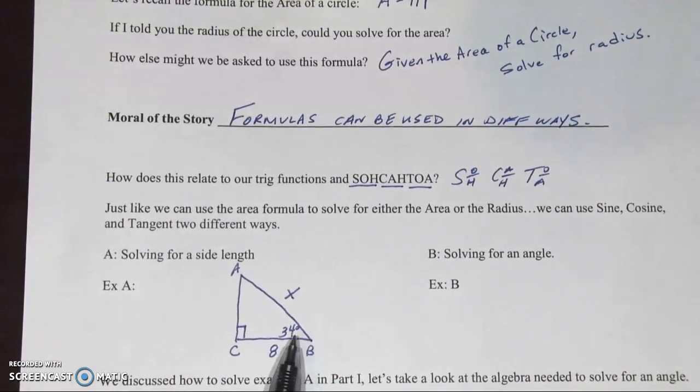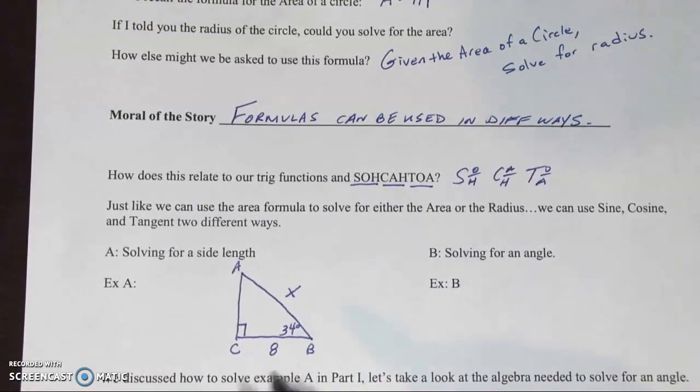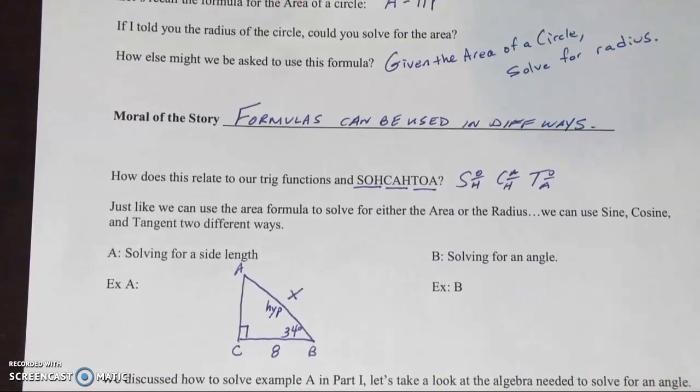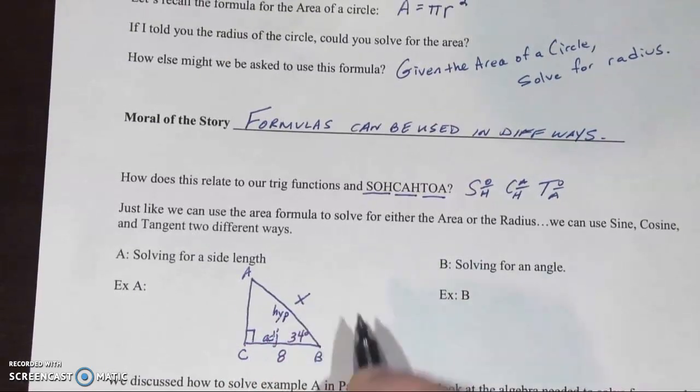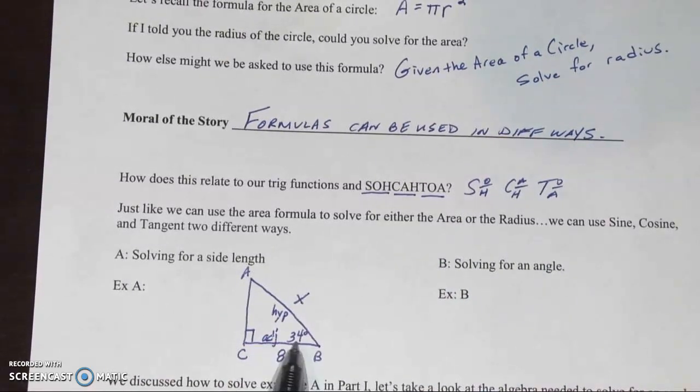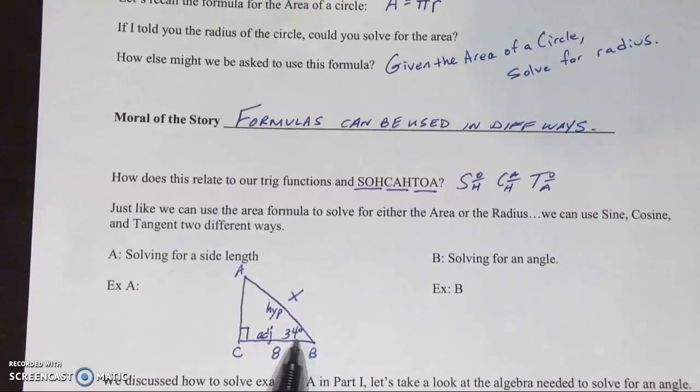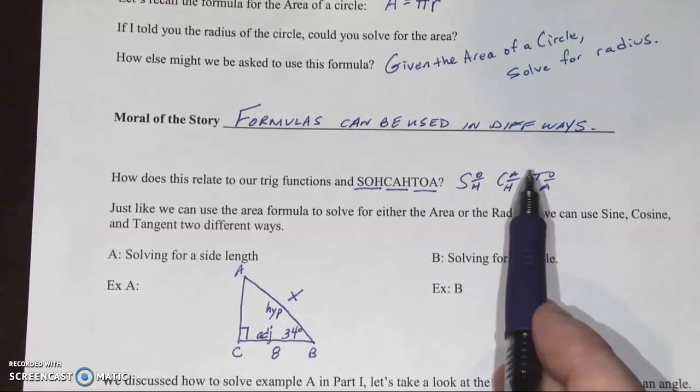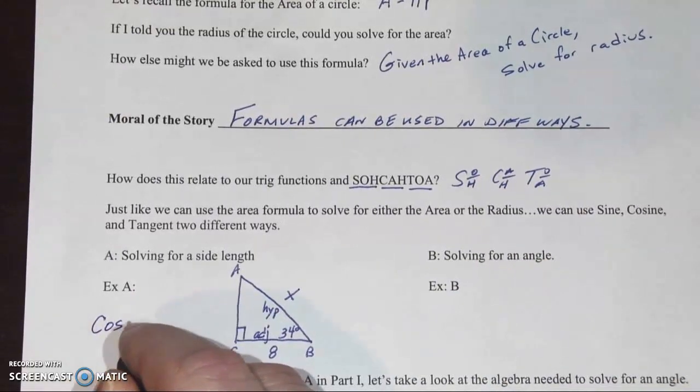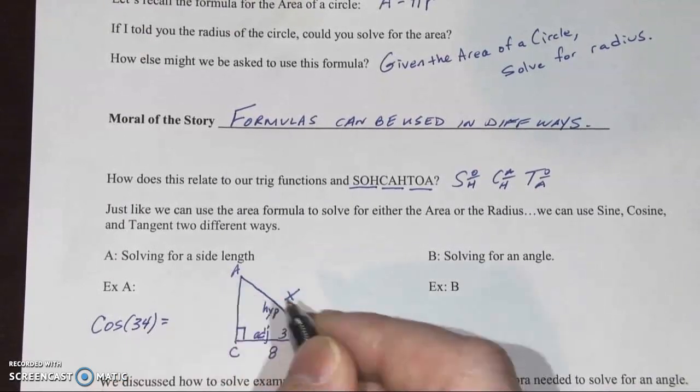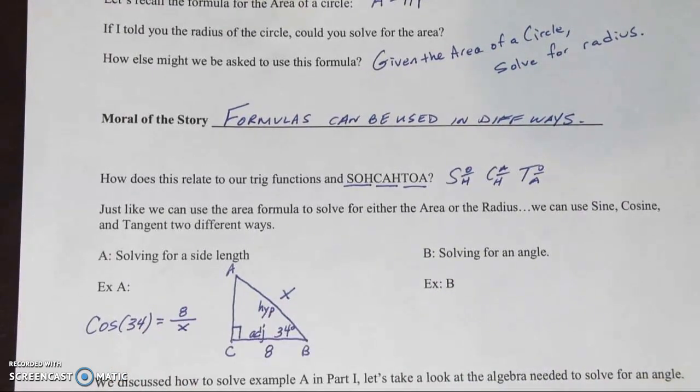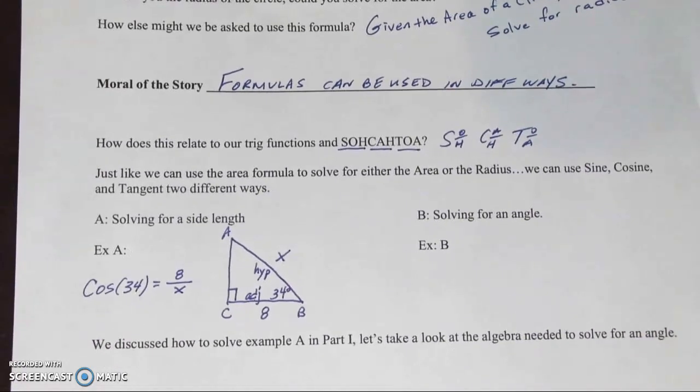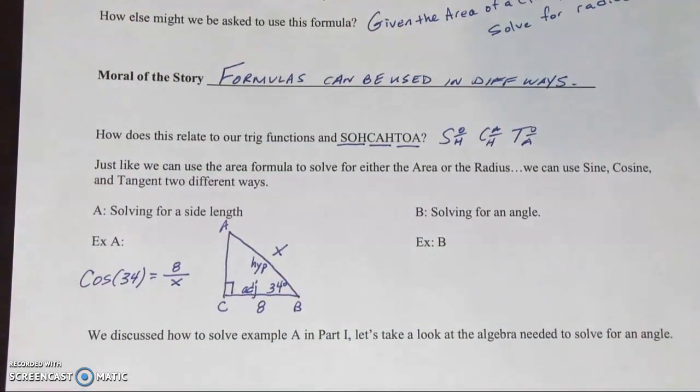In this case, just like we did in part two, we could use trigonometry to solve for this missing side length. A little recap. Here's my 34 degree angle. First thing we like to identify is that this is the hypotenuse. And then our 8 here would be the adjacent side from the 34 degree angle. So now we choose which trig function we want to use. Adjacent and hypotenuse. So CAHOA, that would be cosine. So cosine, our angle measure always goes with the trig function, equals adjacent over hypotenuse. And we could go ahead and solve from there. We're not going to do that. We did that a lot in part two.